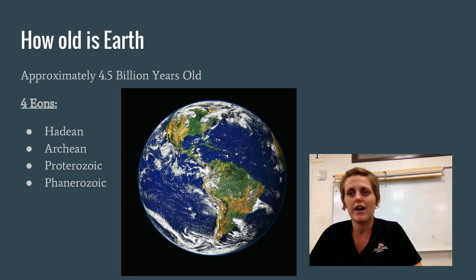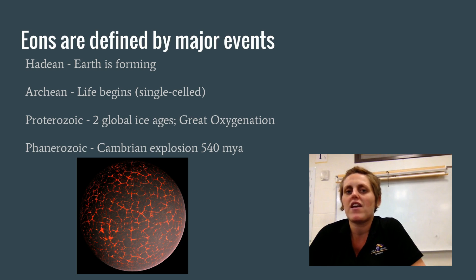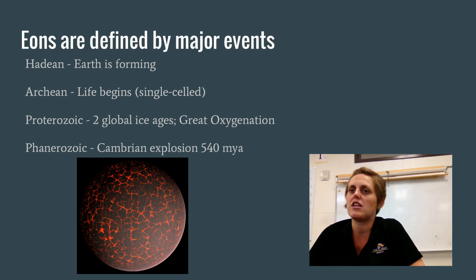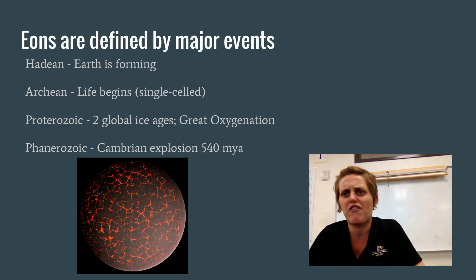These eons are not evenly spaced — it's not just every billion years as an eon. They are actually defined by major events. For instance, in the Hadean, Earth was molten rock turning into land. Then water came, and the first land masses started coming up through the water through volcanic activity. It was a fire and brimstone kind of time.